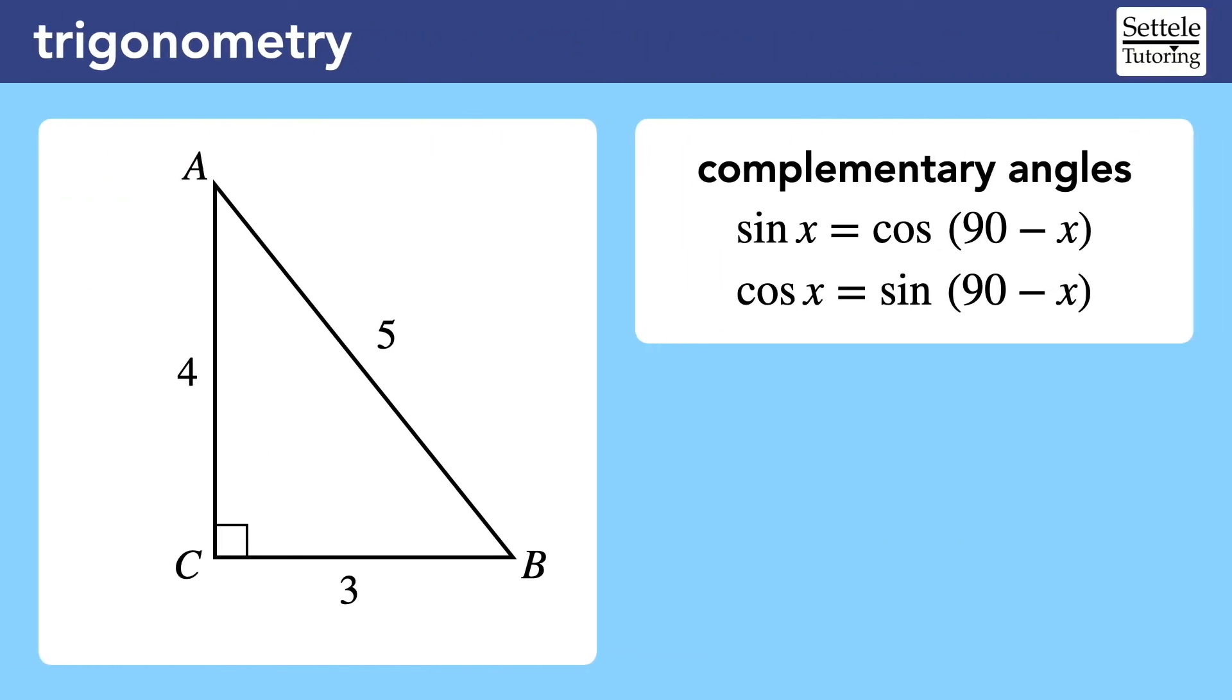Let's return to the simpler triangle to examine the other trigonometry formulas that you need to memorize. The sine of x is equal to the cosine of 90 minus x, and similarly, the cosine of x is equal to the sine of 90 minus x. These formulas relate the complementary angles in a right triangle.